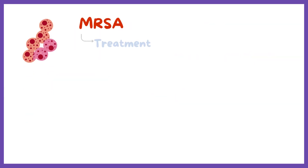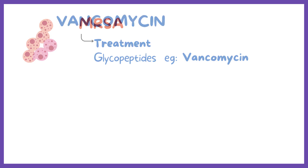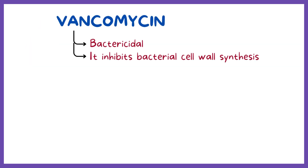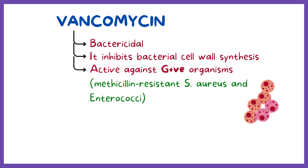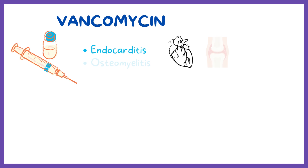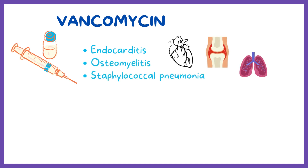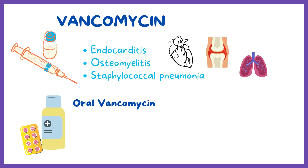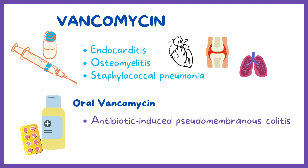MRSA can be treated with another class of antibiotics called glycopeptide antibiotics, like vancomycin. Vancomycin is bactericidal; it inhibits bacterial cell wall synthesis. It is active against most gram-positive organisms, including methicillin-resistant strains of S. aureus and enterococci. Vancomycin is usually reserved for serious infections, especially those caused by methicillin-resistant staphylococci. Typical uses include endocarditis, osteomyelitis, and staphylococcal pneumonia. Oral vancomycin is also valuable in treating antibiotic-induced pseudomembranous colitis caused by Clostridium difficile or S. aureus enterocolitis.